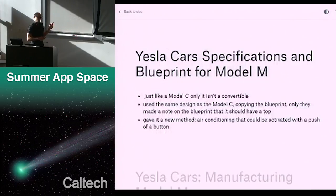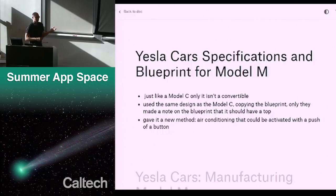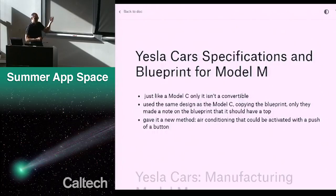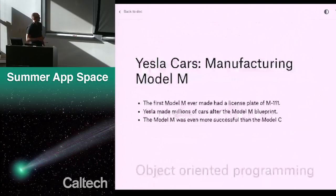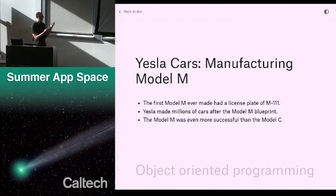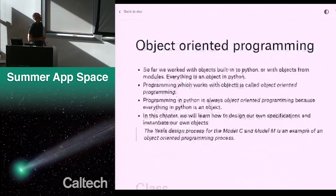A little while later, Yesla wants to make a new car that's very similar to the C but slightly different with some additional features. They call it the Model M — just like the Model C, except that it's not a convertible; it's got a hard top. It's the same design as the Model C, same blueprint, except for a couple of changes, such as it has a top. They gave it a new feature: air conditioning. Since it has a top, you can cool it without the cold air escaping. Once you have the blueprint, you can make new instantiations of that car. These get identifying numbers — M111, et cetera — even more successful than the Model C.